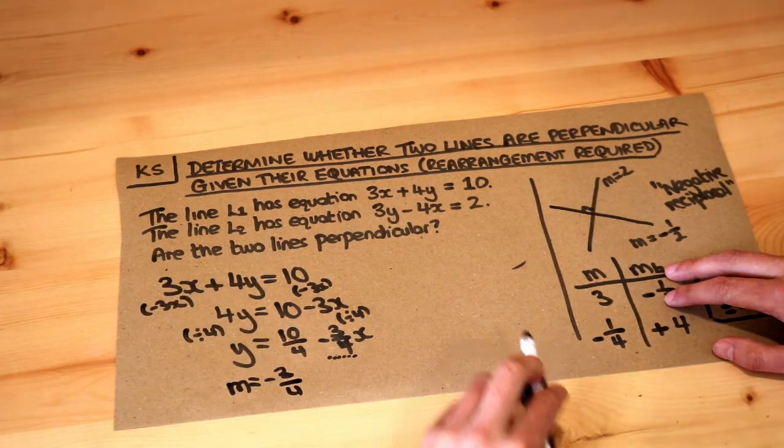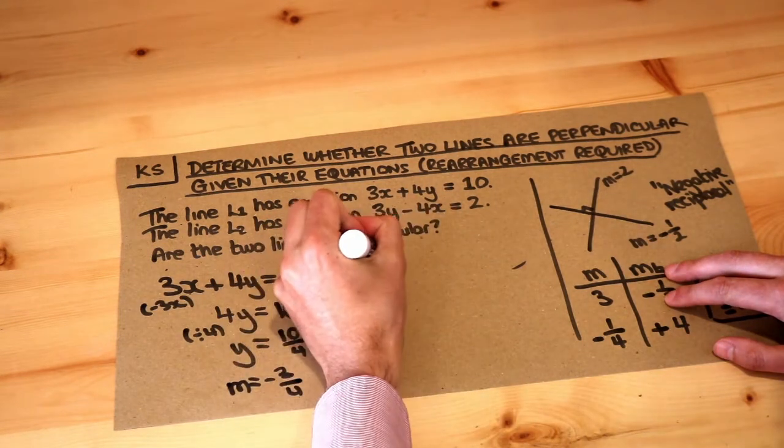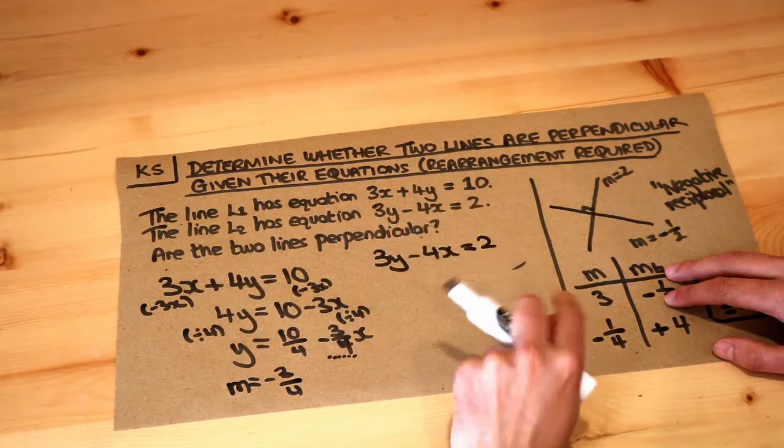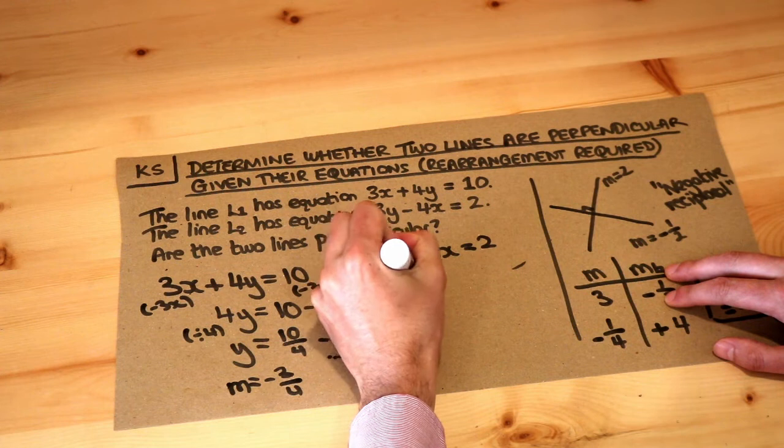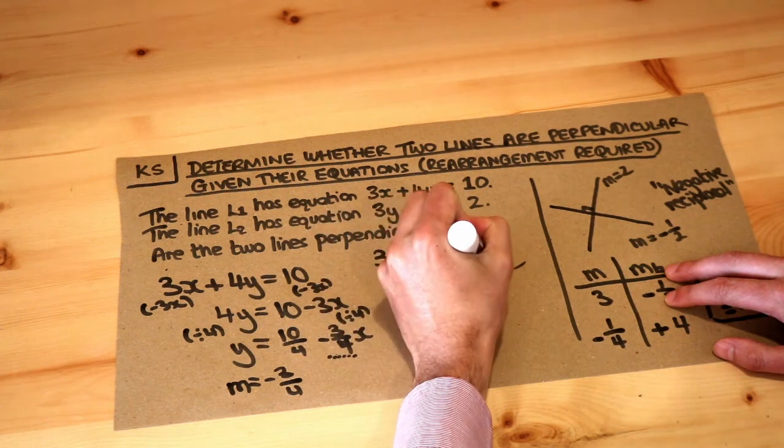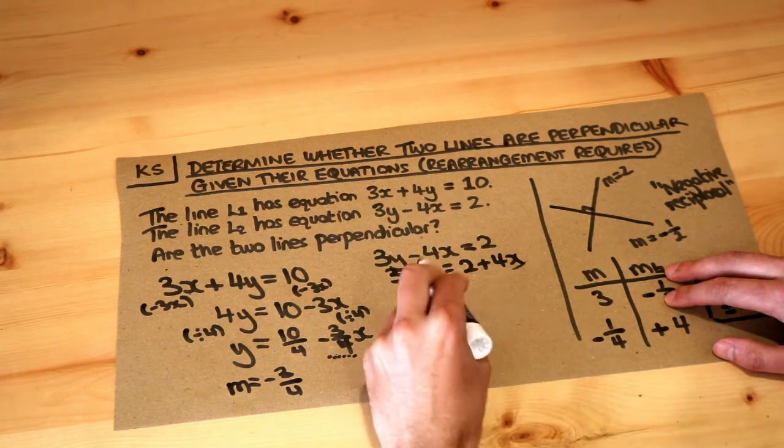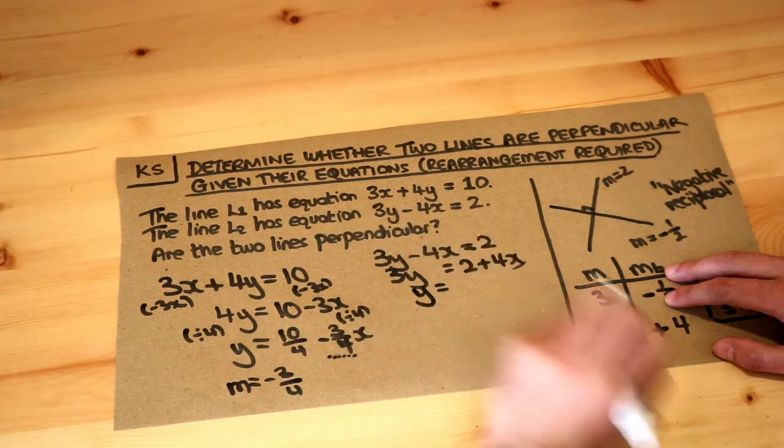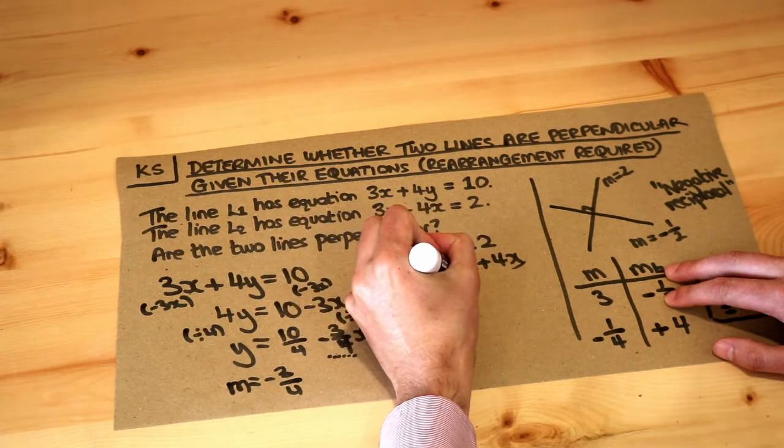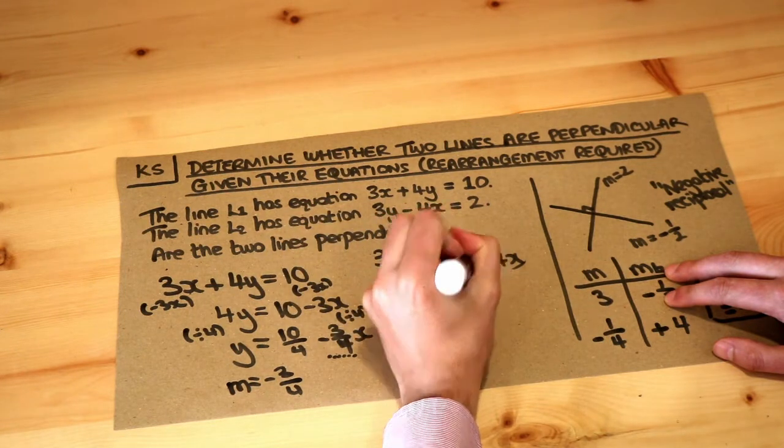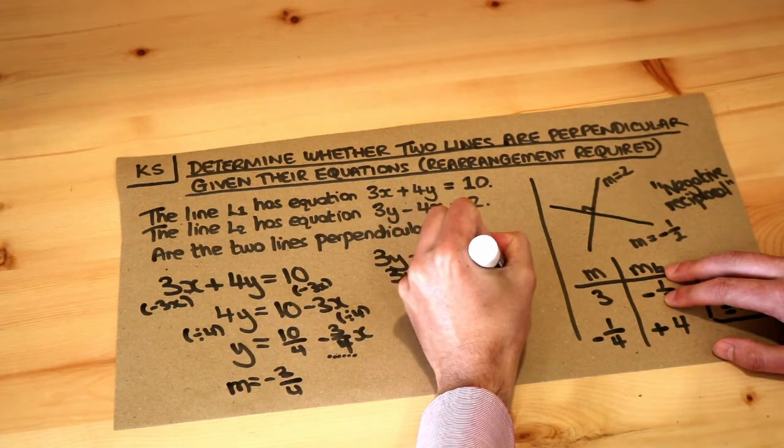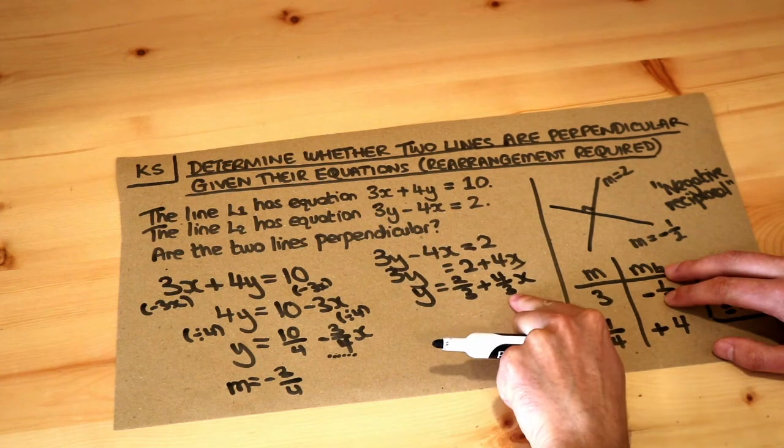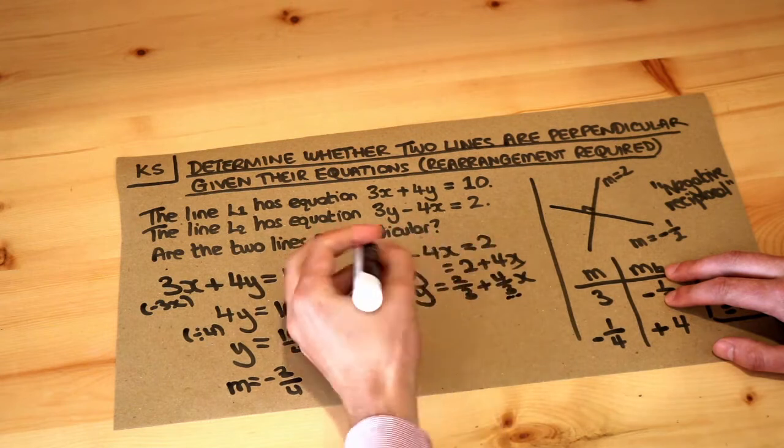We can do the same thing with the other line. We've got 3y - 4x = 2 for the second line. If we add 4x to both sides, we get 2 + 4x. Then divide both sides by 3 to get rid of that 3, and divide each individual term by 3—don't put the whole thing over 3. 2 becomes 2/3, and 4x becomes 4/3x. You just divided the 4 by 3. So we can see here that the gradient is the number in front of x, which is 4/3.